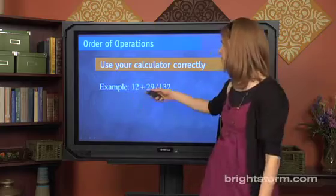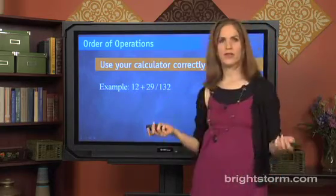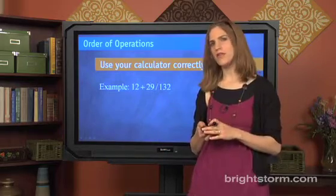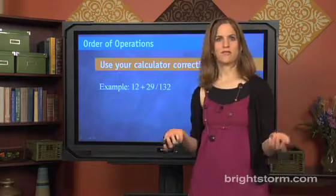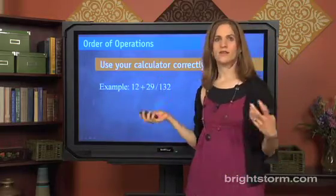Okay, 12 plus 29 over 132, right? 29 divided by 132. So, you know PEMDAS. You know, okay, division would go before addition. So, you would do this first and then you would add 12.